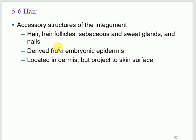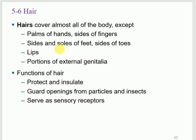Accessory structures start with hair. Hair covers most of the body except the palms, soles, lips, and much of the external genitalia. The function of hair includes insulation and guarding. Hair follicles are located in the dermis, and both hair and nails are made of keratin — they are non-living structures.